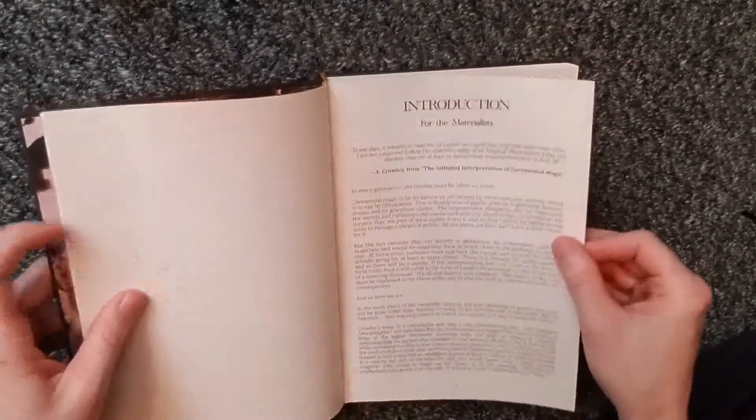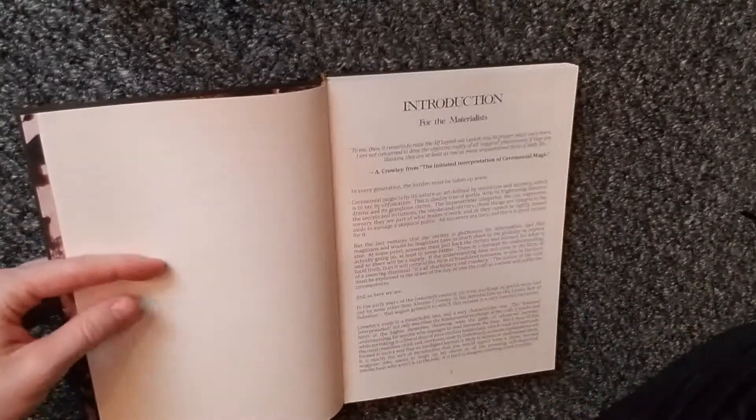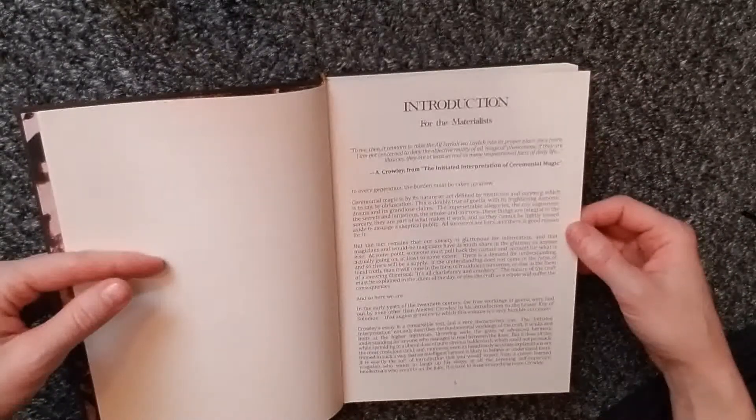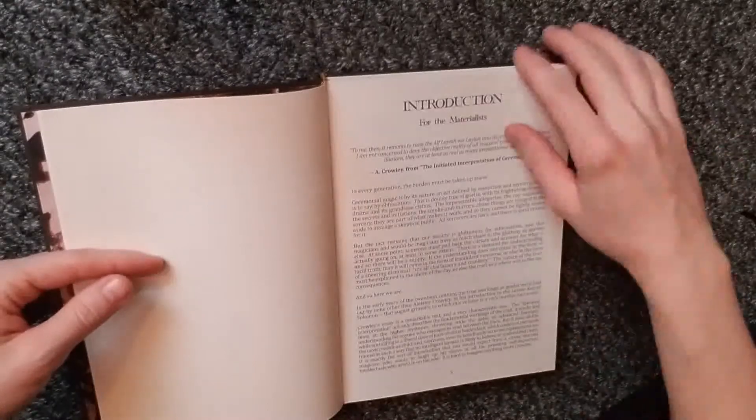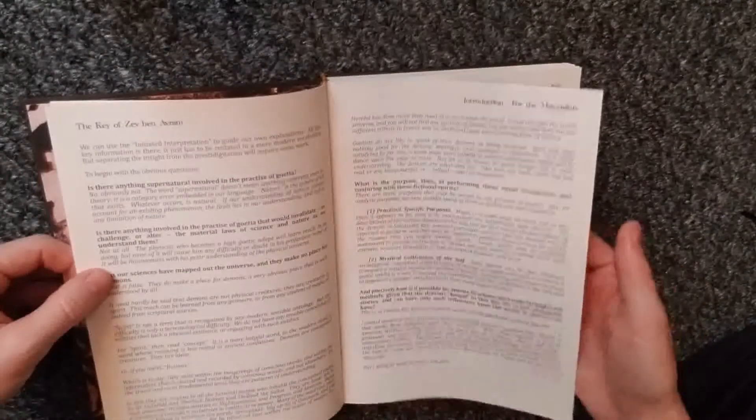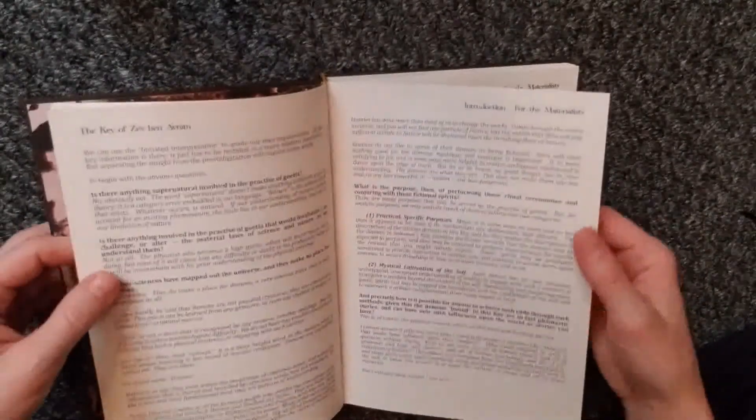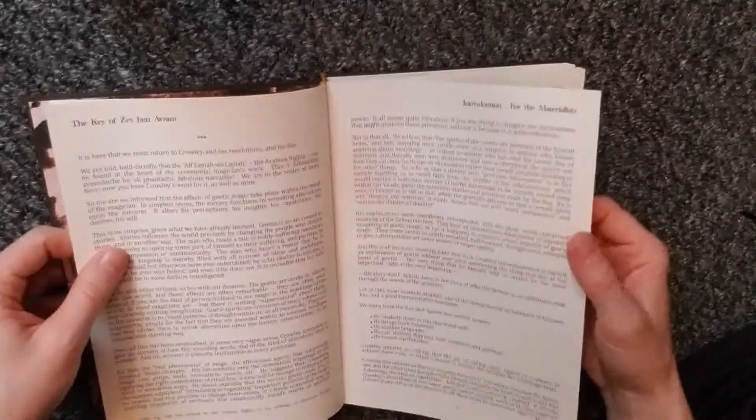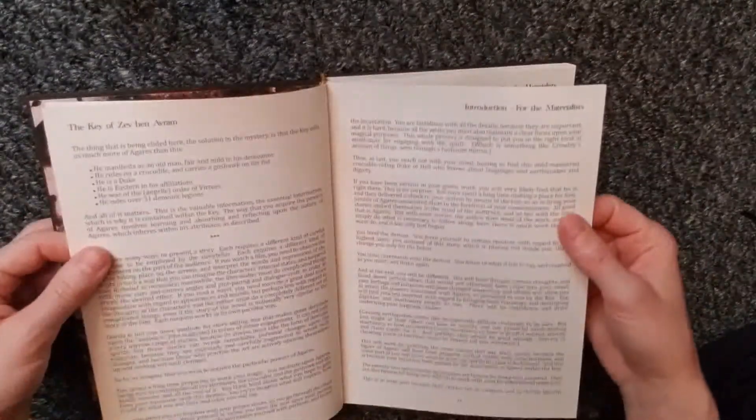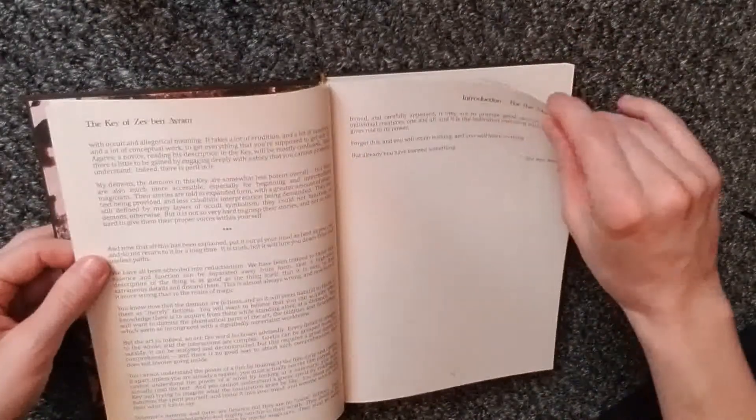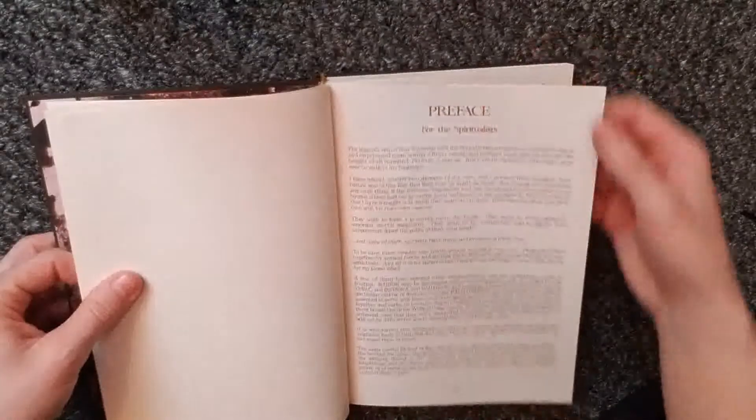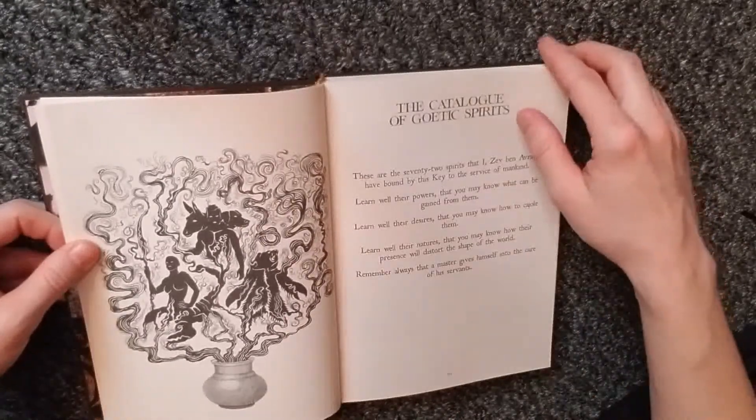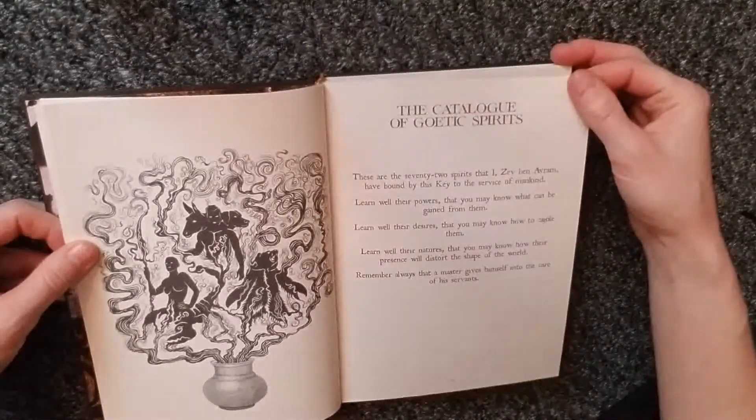So yeah, this is a demonic grimoire. I guess I should have clarified that. Introduction for the materialists, preface for the spiritualists, the catalog of Goetic spirits, the rites of summoning the grand Goetia, afterward meditation on the purposes of the Goetic pact. So what this really is, is basically a grimoire to work with lesser demons. They're not the ones from the Ars Goetia. It's Goetia in the sense of spirit working, not that specific book. This is awesome. But yeah, this author channeled a lot of these spirits and so on. So it's an original grimoire.